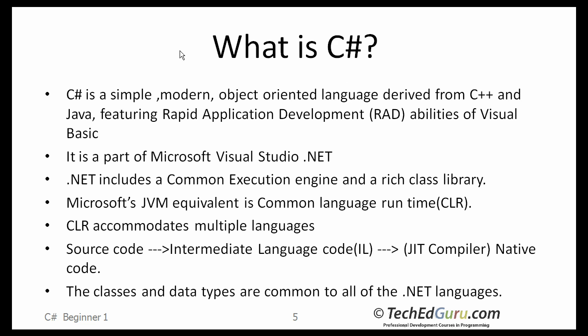C-Sharp is just one of the languages supported in .NET, and C-Sharp is what I am going to be focusing on. So, what is C-Sharp? C-Sharp is a simple, modern, object-oriented language derived from C++ and Java. It is more like Java than like C++. It allows you to quickly develop applications using rapid application development technologies.